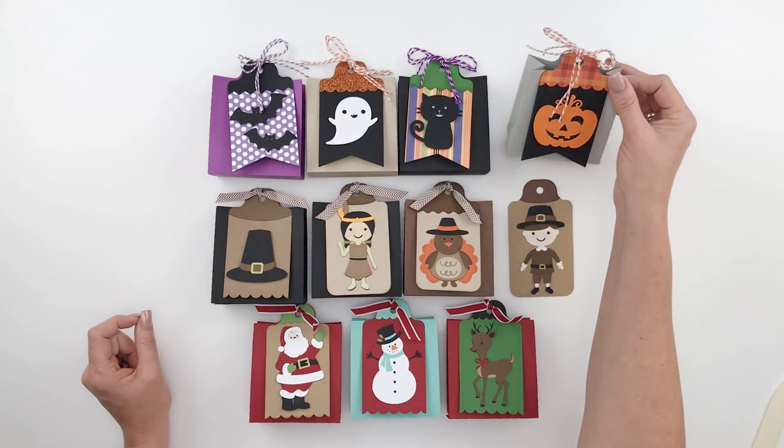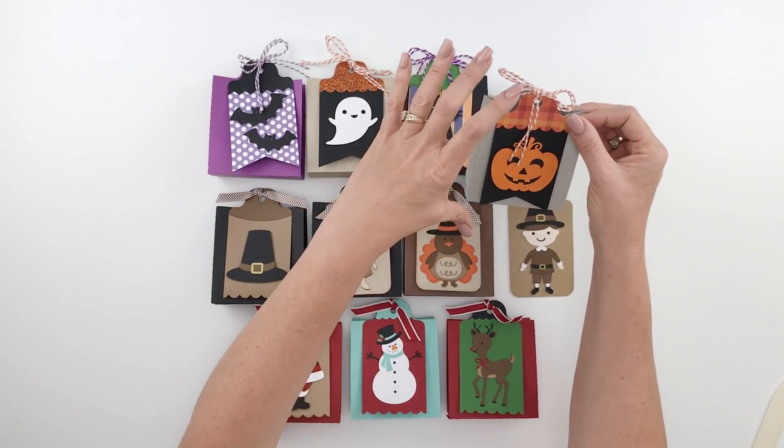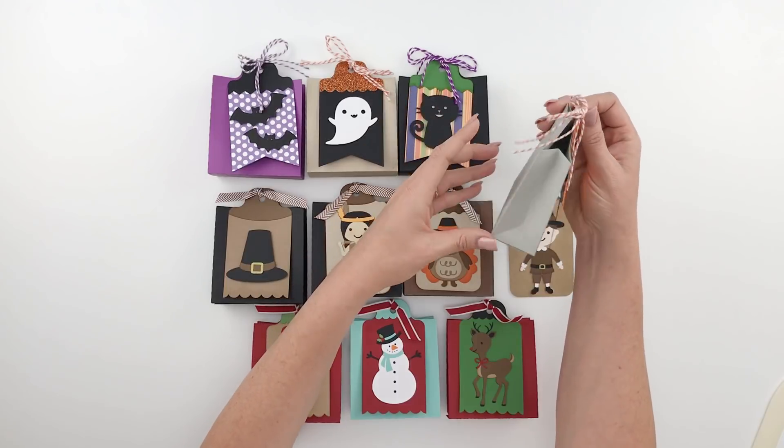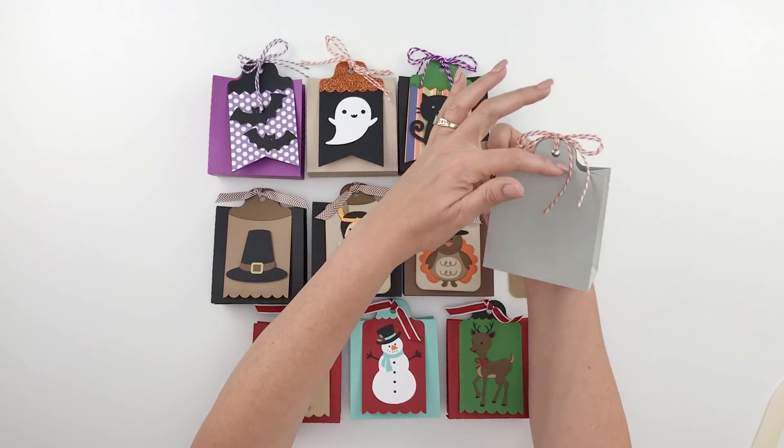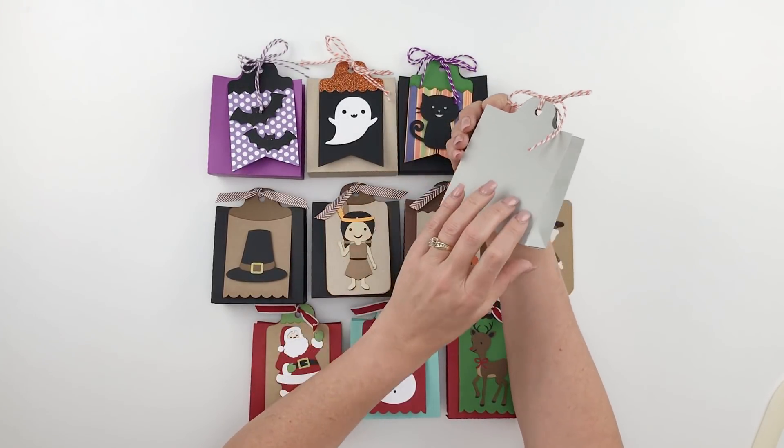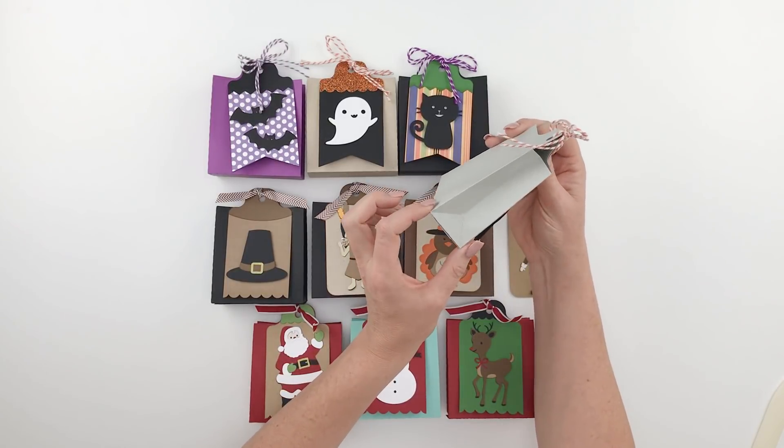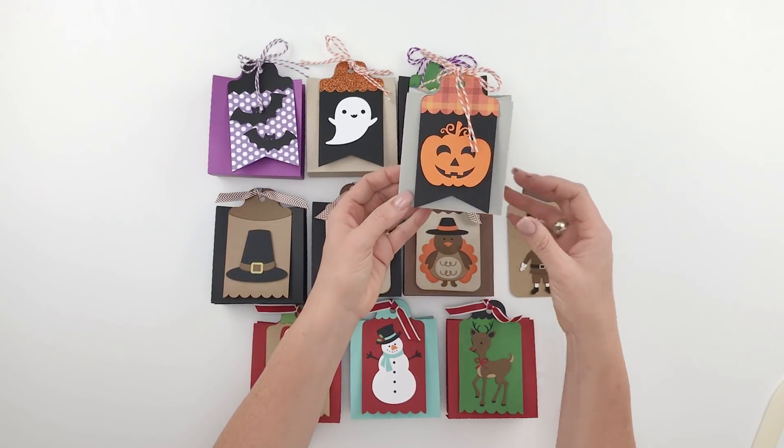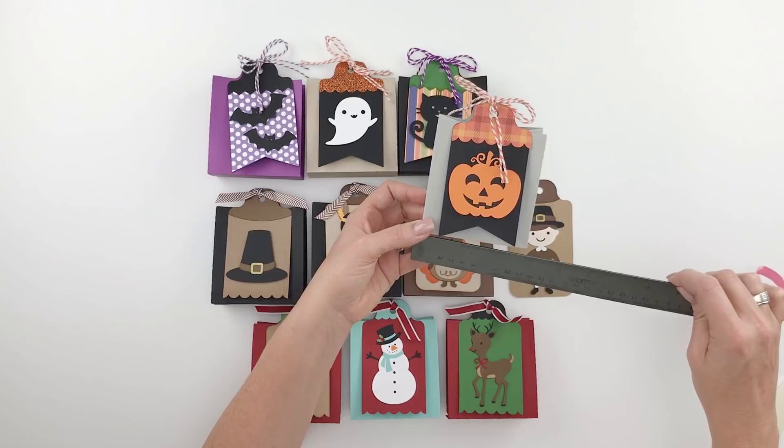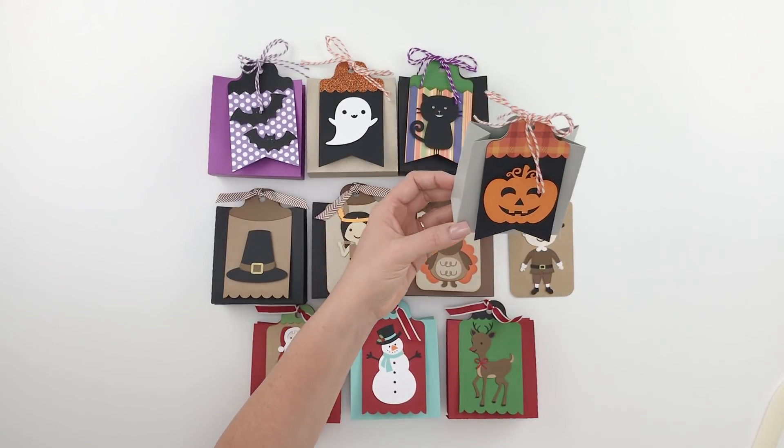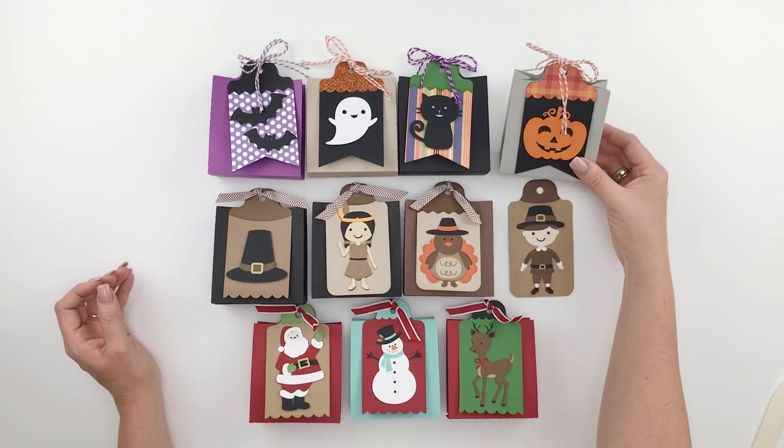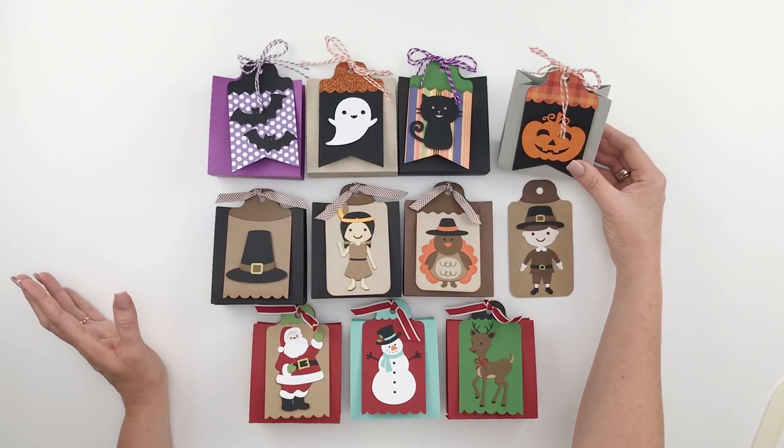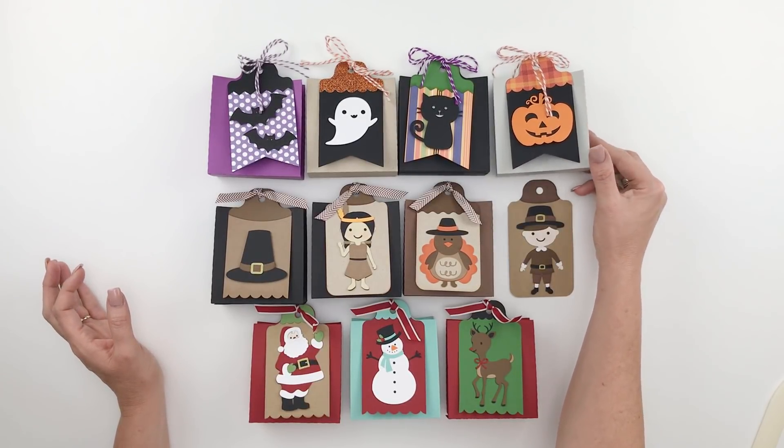These darling little boxes are about five inches tall including the tag, including the little tag top piece on the box. They're about an inch and a half deep and about three and a half inches wide, so they're really easy to put together.